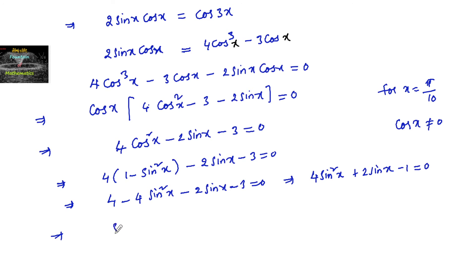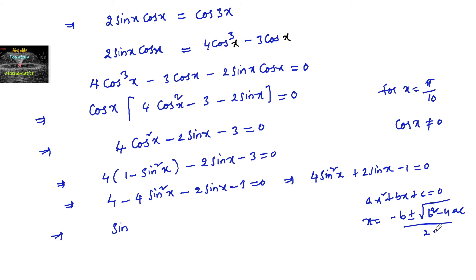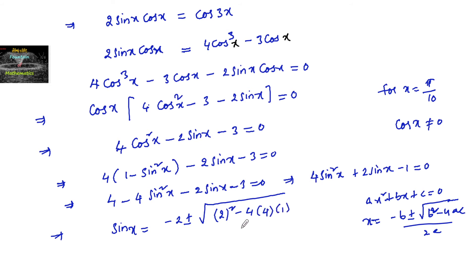Solving using the quadratic formula: for ax² + bx + c = 0, the solution is x = (-b ± √(b² - 4ac)) / 2a. Here a = 4, b = 2, c = -1, so sin x = (-2 ± √(4 - 4×4×(-1))) / (2×4).